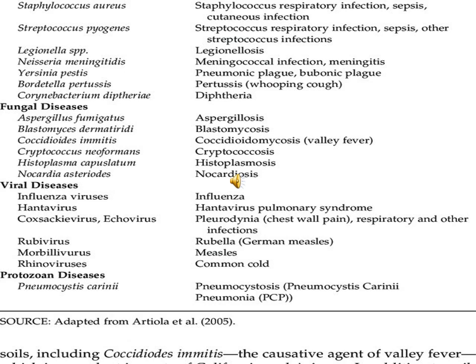Fungal diseases are caused by Histoplasma, Aspergillus, and others. Viral diseases include influenza, hantavirus pulmonary syndrome, and other respiratory infections. Rubella, measles, and the common cold are also viral airborne diseases. Protozoan diseases include Pneumocystis carinii, which can cause pneumocystosis and Pneumocystis carinii pneumonia.